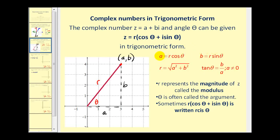R represents the magnitude of Z, sometimes called the modulus, and theta is sometimes referred to as the argument. Sometimes we use the shorthand notation R cis theta to represent R times the quantity cosine theta plus i sine theta. Let's go ahead and try a few of these conversions.